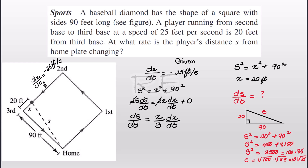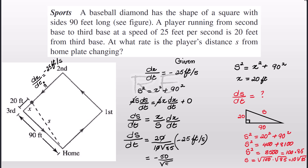Now that we have found s, ds/dt equals x, which is 20 feet, divided by 10 times the square root of 85, times dx/dt, which is negative 25 feet per second. Dividing both 10 and 20 by 10 gives 2, and 2 times negative 25 is negative 50. So ds/dt is negative 50 divided by the square root of 85 feet per second, which is approximately negative 5.42 feet per second.